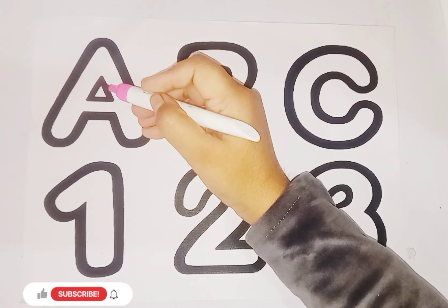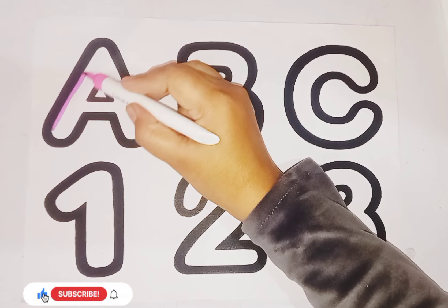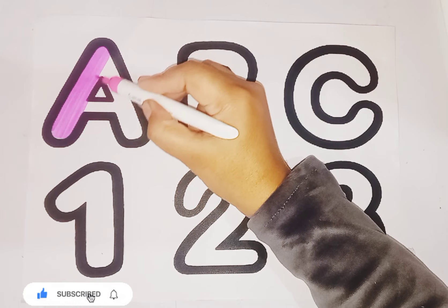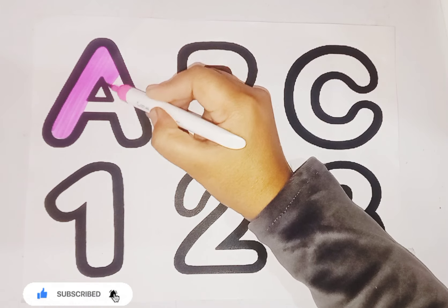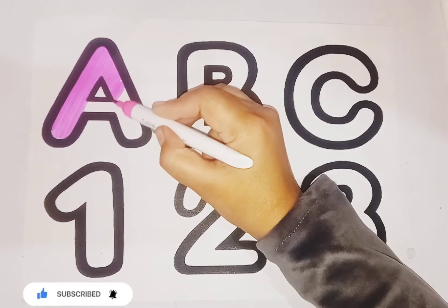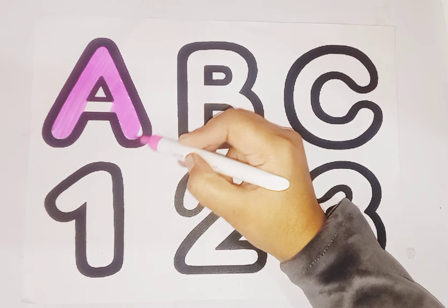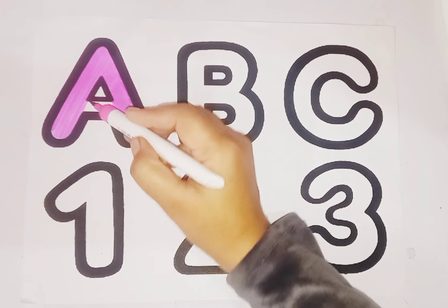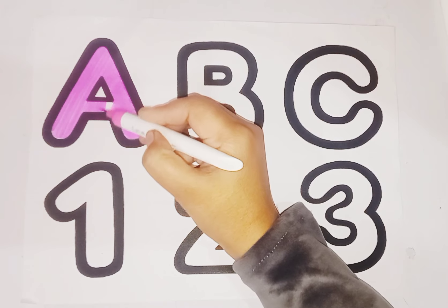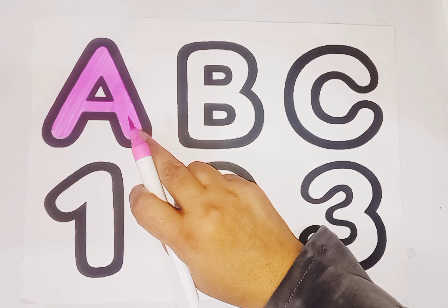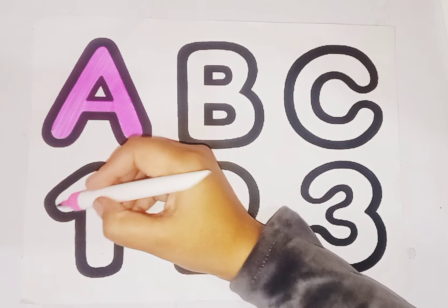Pink color, alphabet A. A is for apple, A is for aunt, this is letter A. Which letter is this kids? This is letter A. And number A is 1.